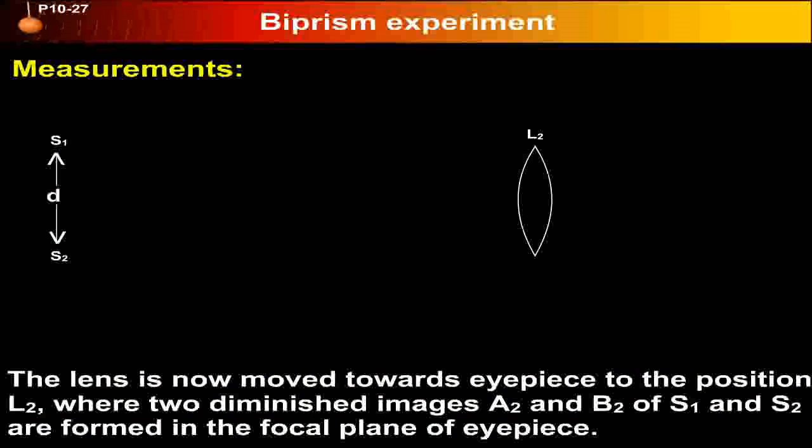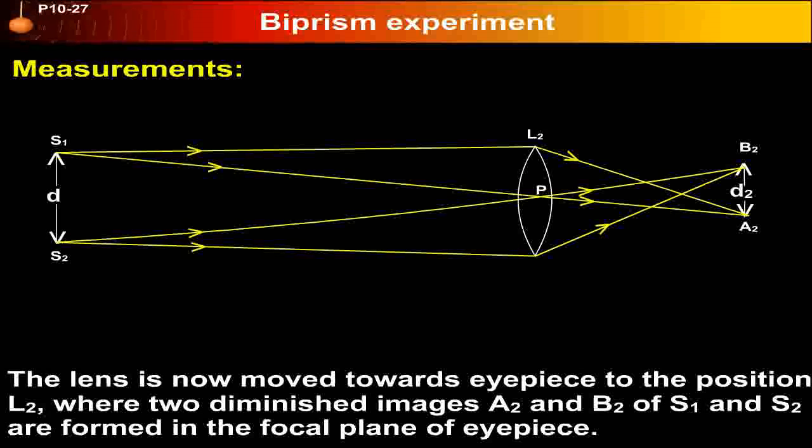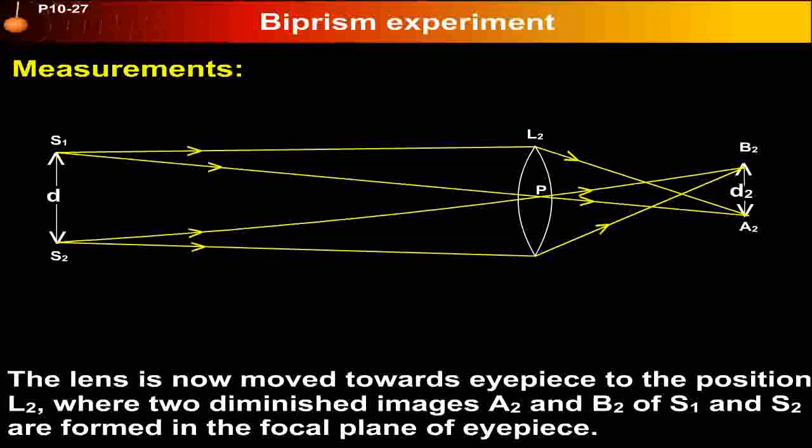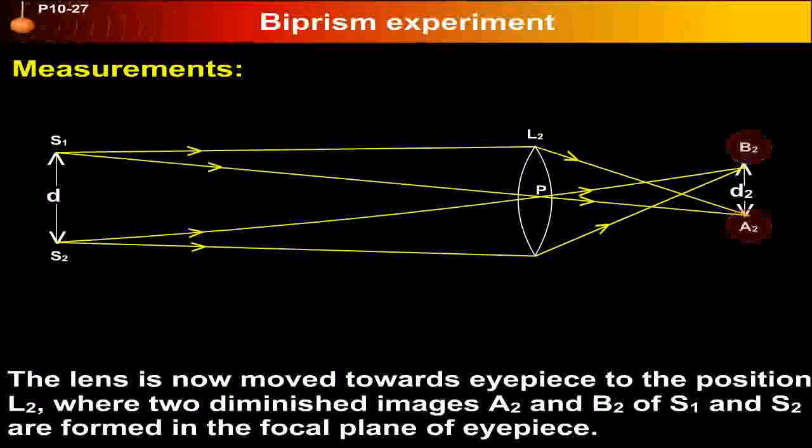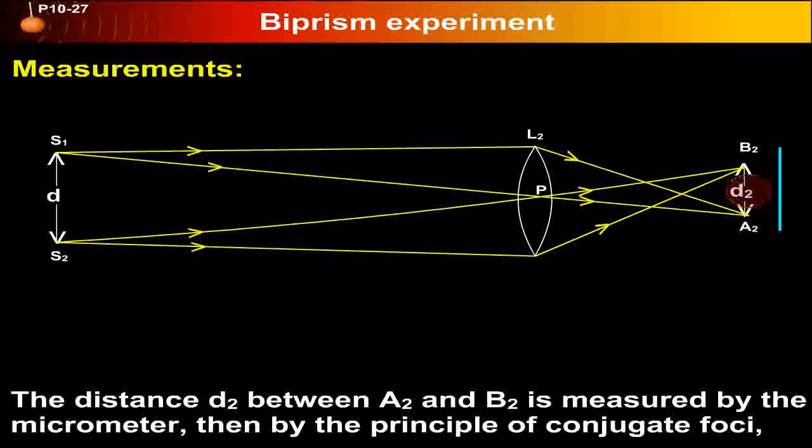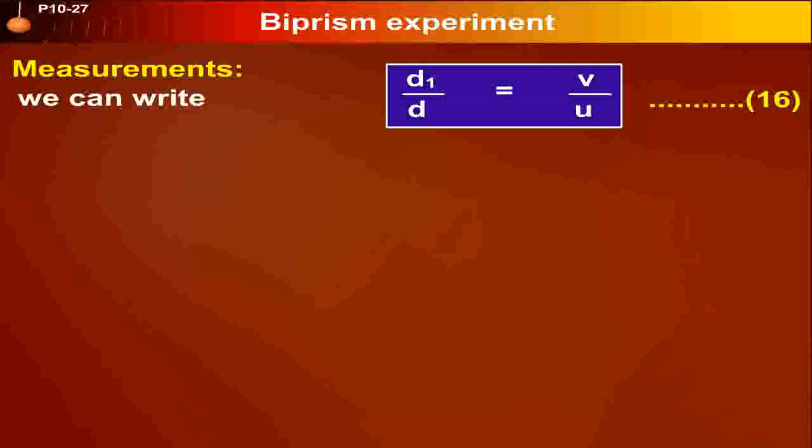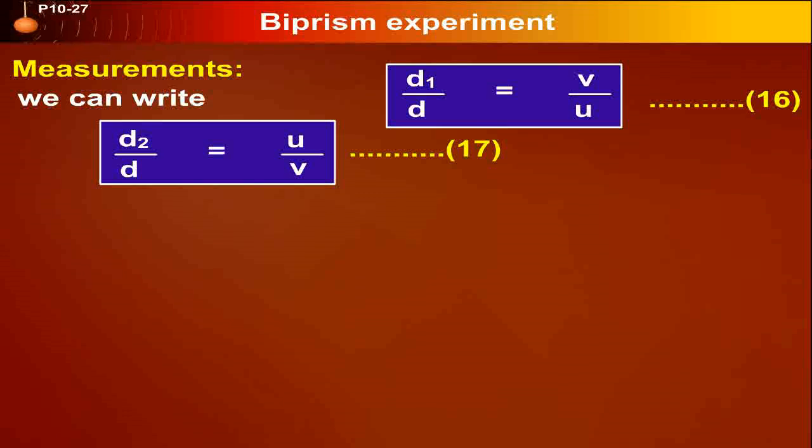The lens is now moved toward the eyepiece to the position L2, where two diminished images A2 and B2 of S1 and S2 are formed in the focal plane of the eyepiece. The distance small d2 between A2 and B2 is measured by the micrometer. Then by the principle of conjugate foci, we can write: small d2 upon d equals u upon v.